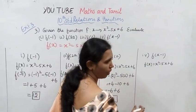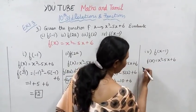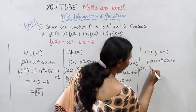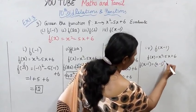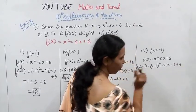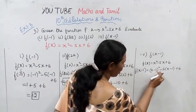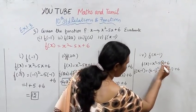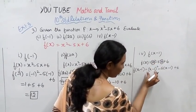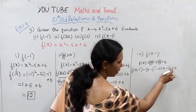Now f of x minus 1. f of x is x square minus 5x plus 6. For f of x minus 1, substitute x minus 1 in place of x: x minus 1 the whole square minus 5 into x minus 1 plus 6.